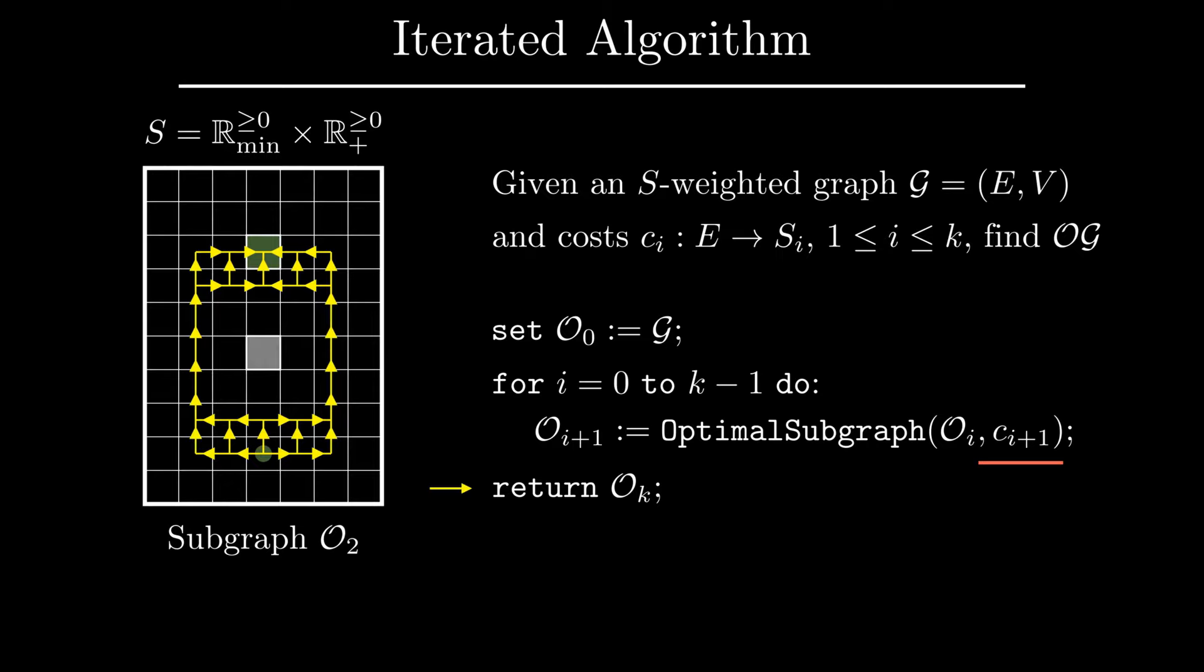In the next iteration, we find the optimal subgraph of O_1 relative to the second cost function. That is, we find all the shortest paths from the root to the goal among the paths within O_1. In this example, multi-cost has only two coordinates, so the resulting graph O_2 is the output of the algorithm. Notice that all paths within O_2 are optimal with regard to the cost structure provided by the multi-cost S.